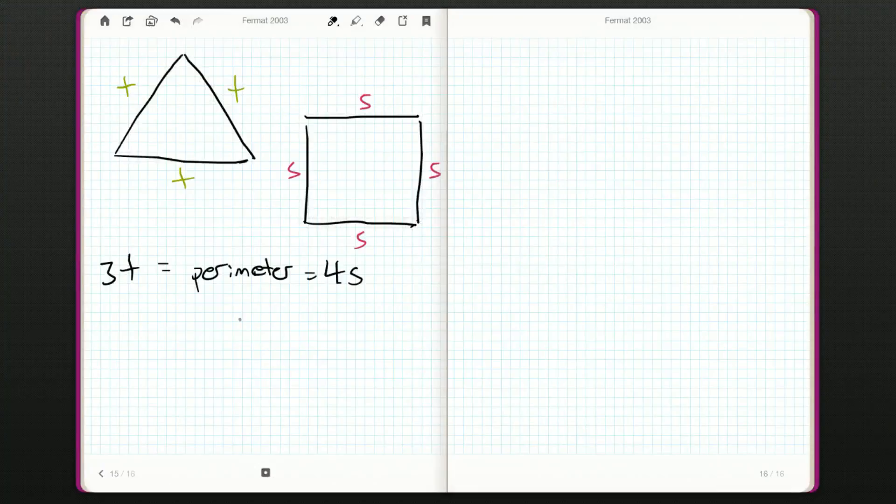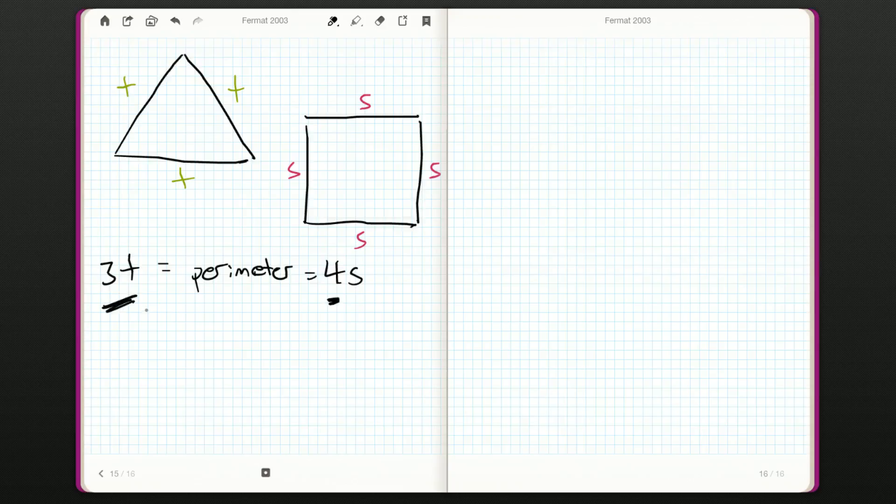And if they're integers, one thing we can say is that 4 must be a factor of 3t. So 4 must divide 3t. Now there's no way that 4 can divide 3.